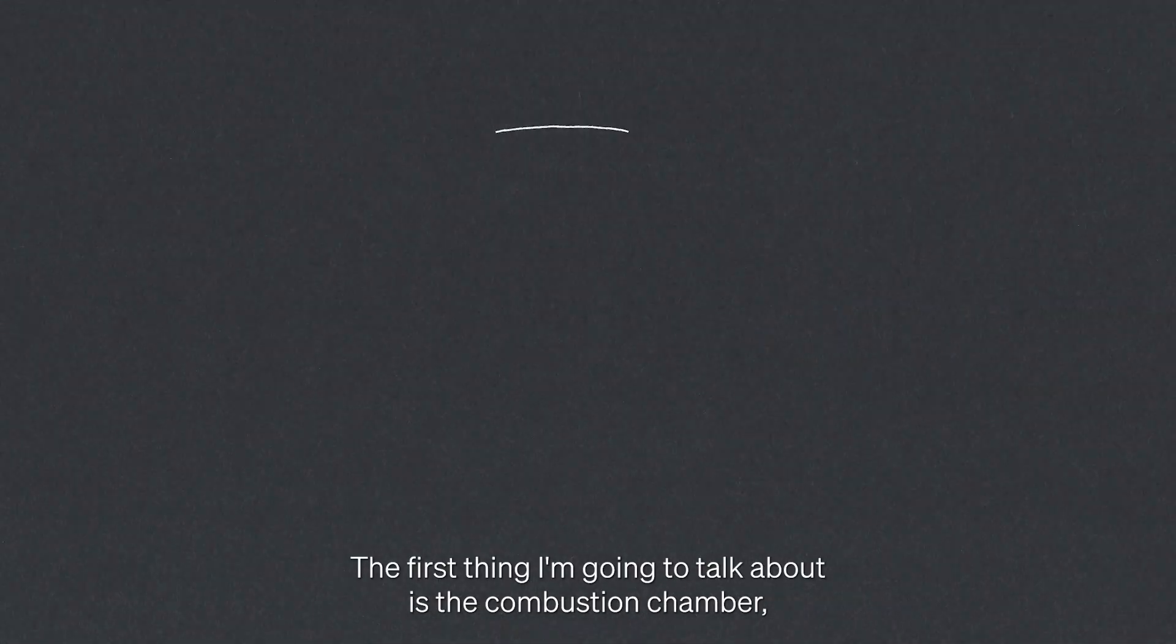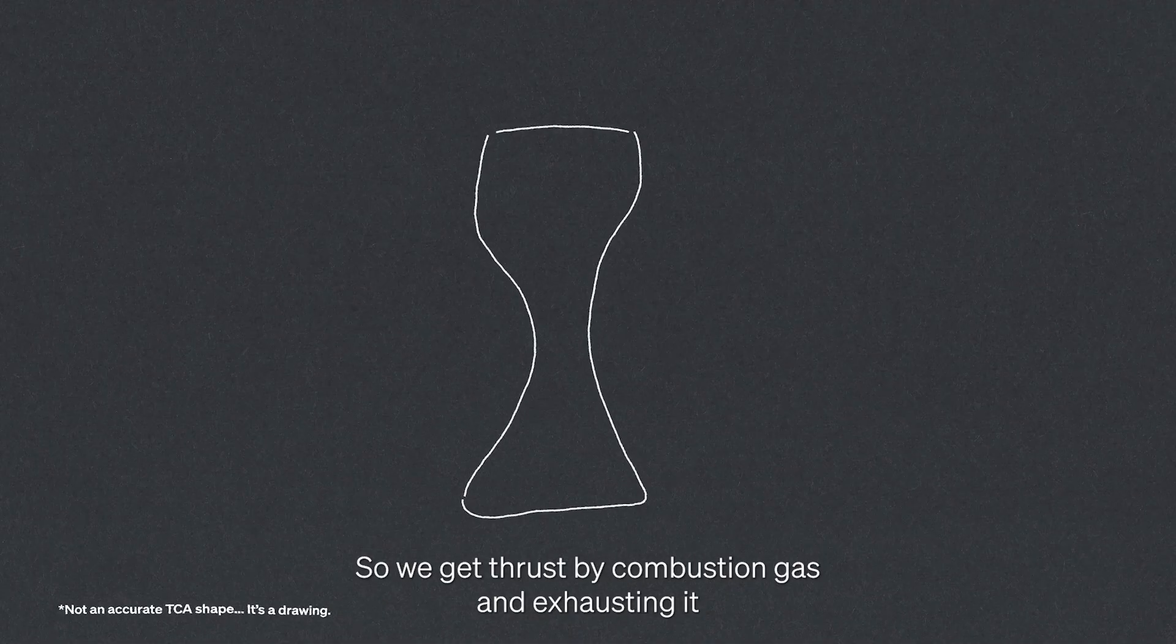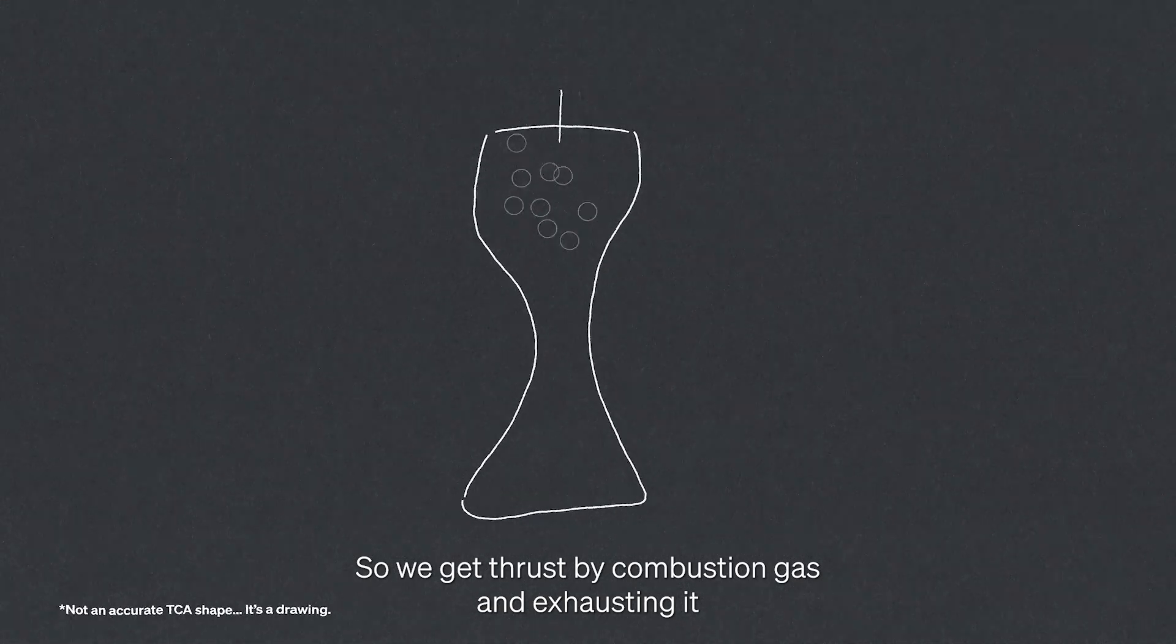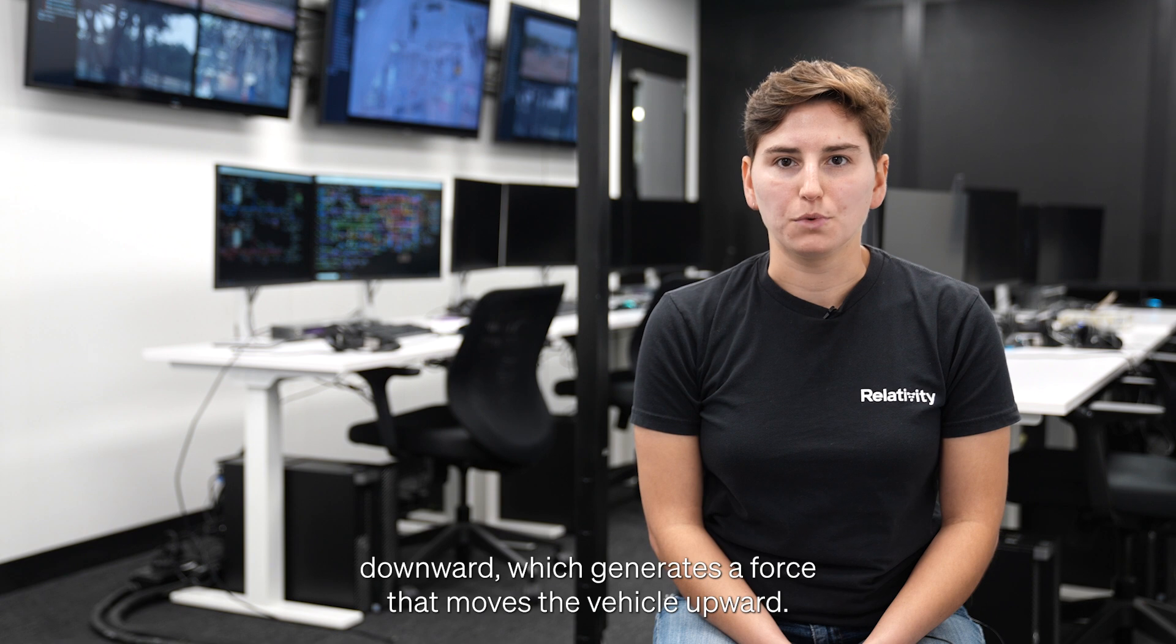The first thing I'm going to talk about is the combustion chamber, which is effectively the last component on the vehicle. We get thrust by combusting gas and exhausting it downward, which generates a force that moves the vehicle upward.